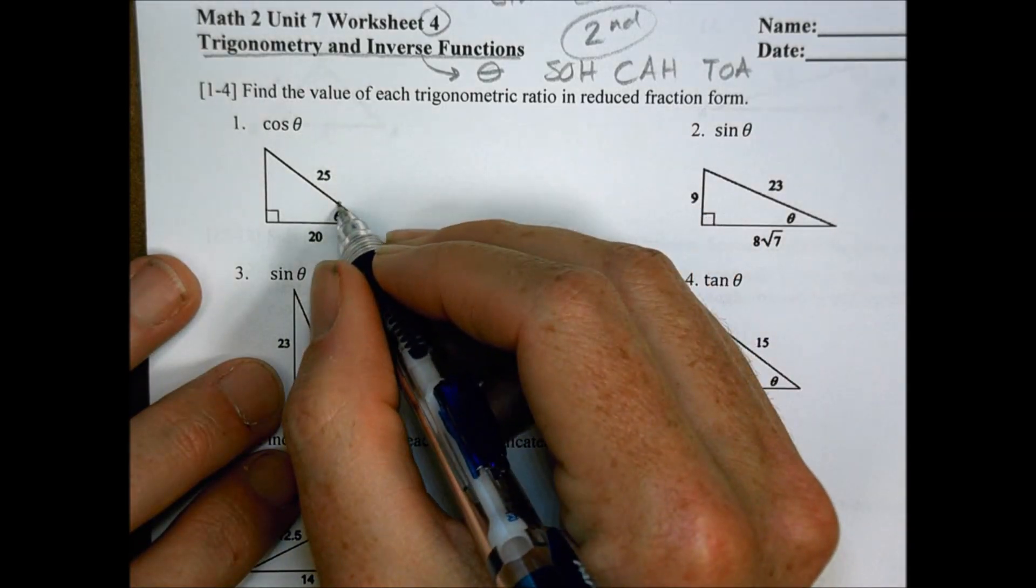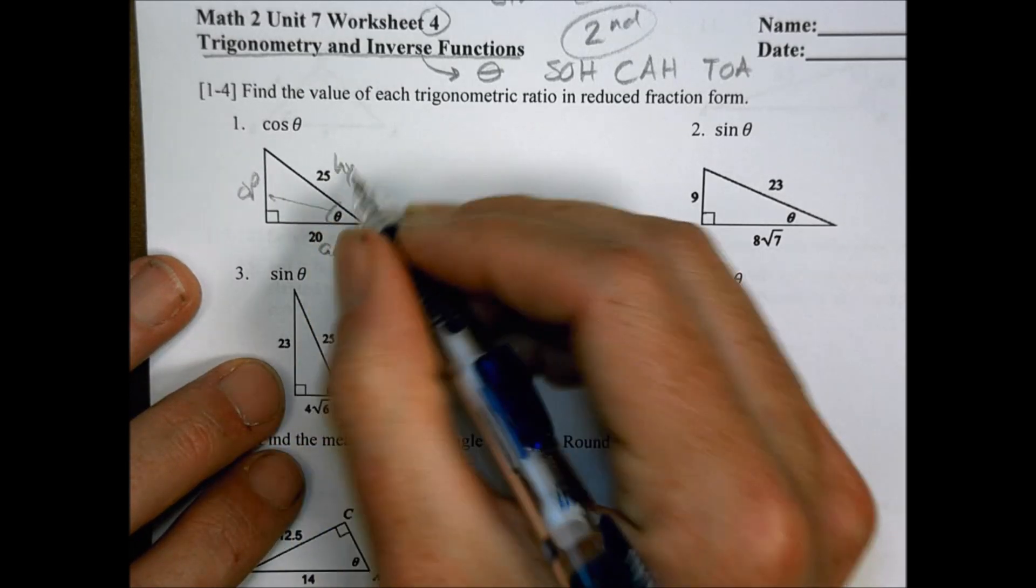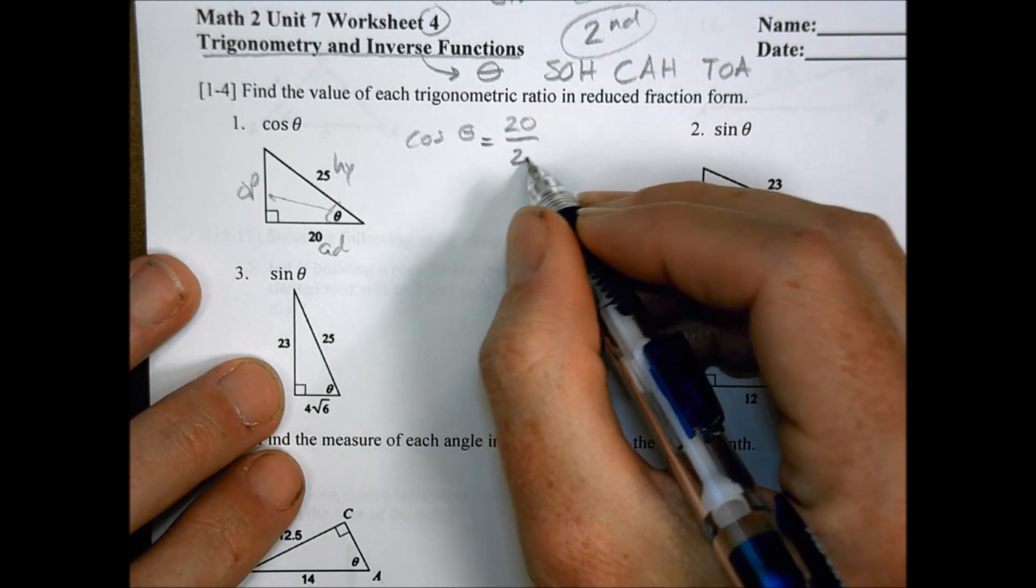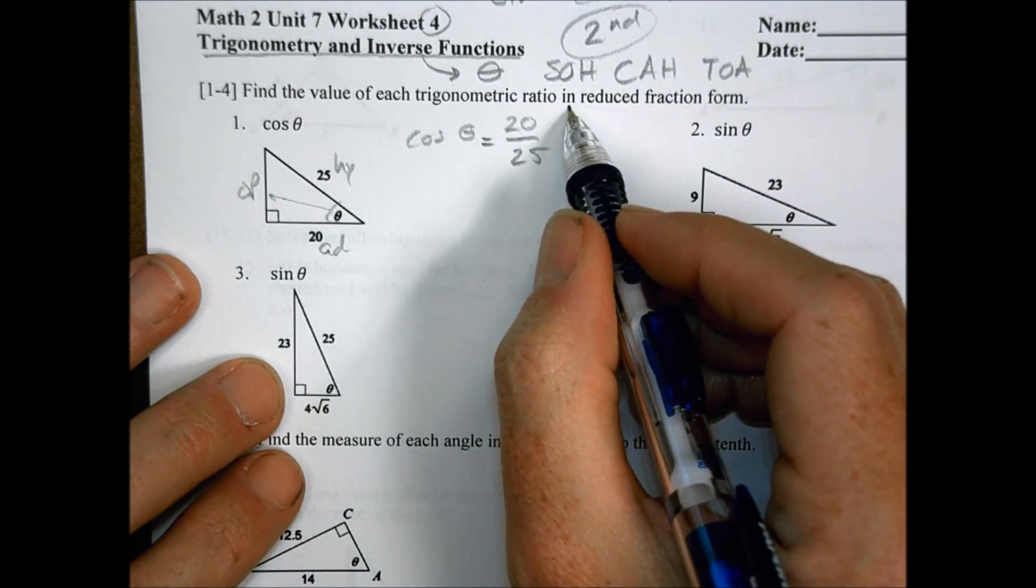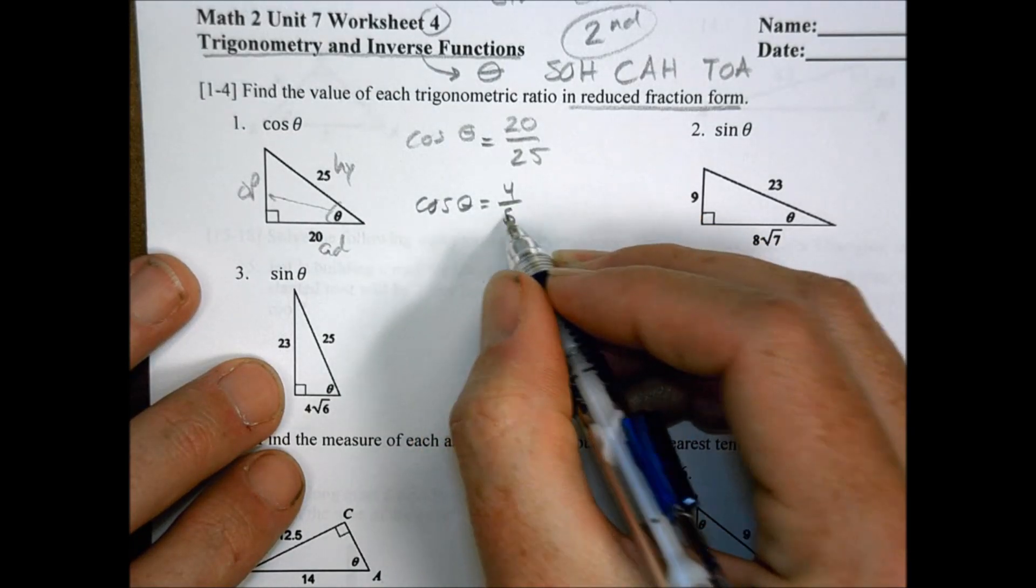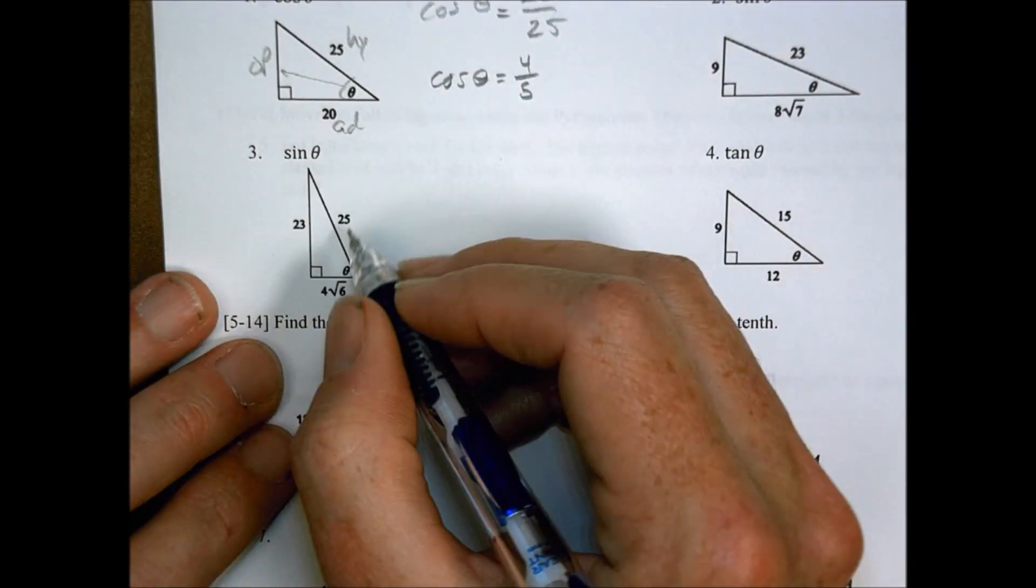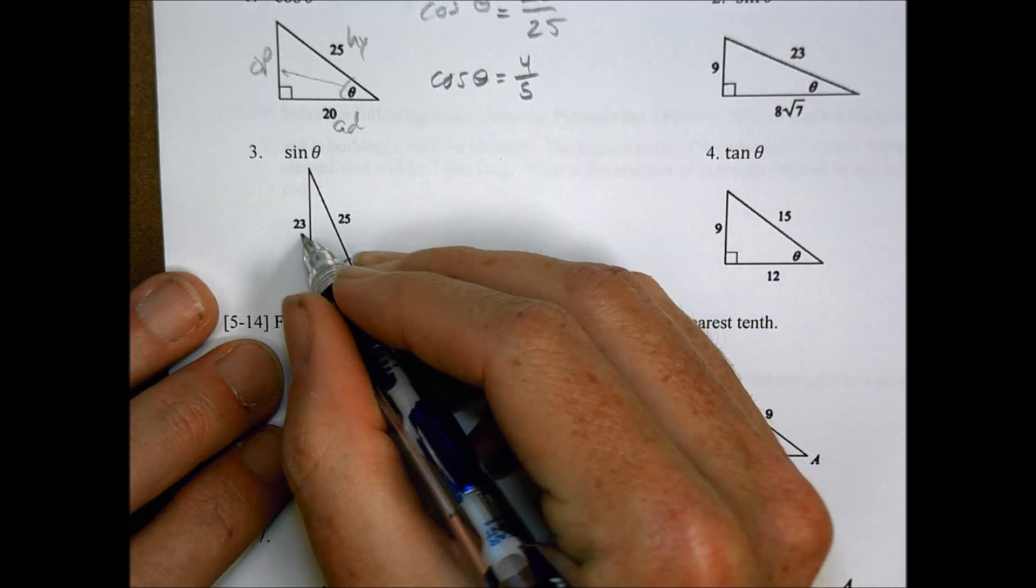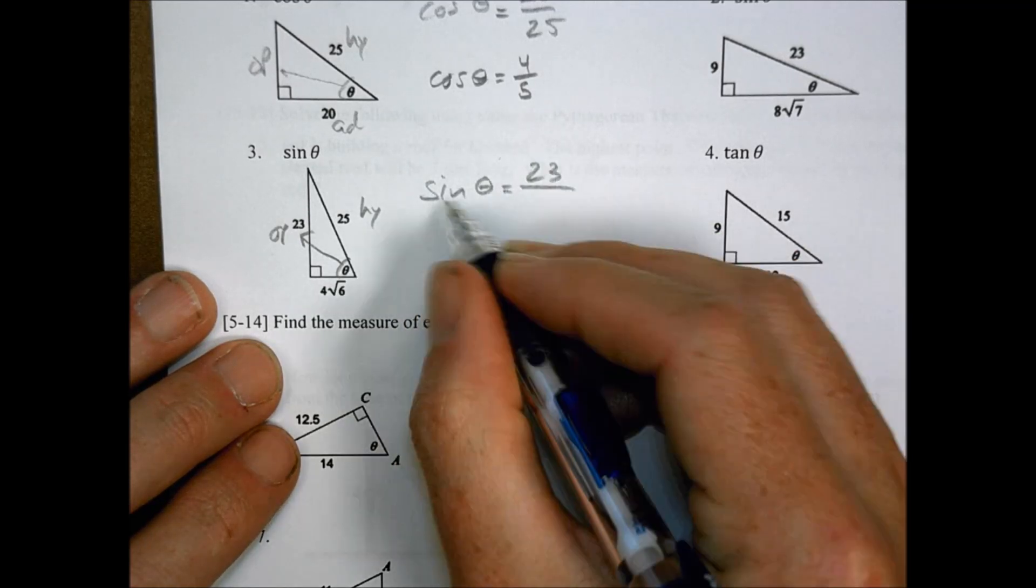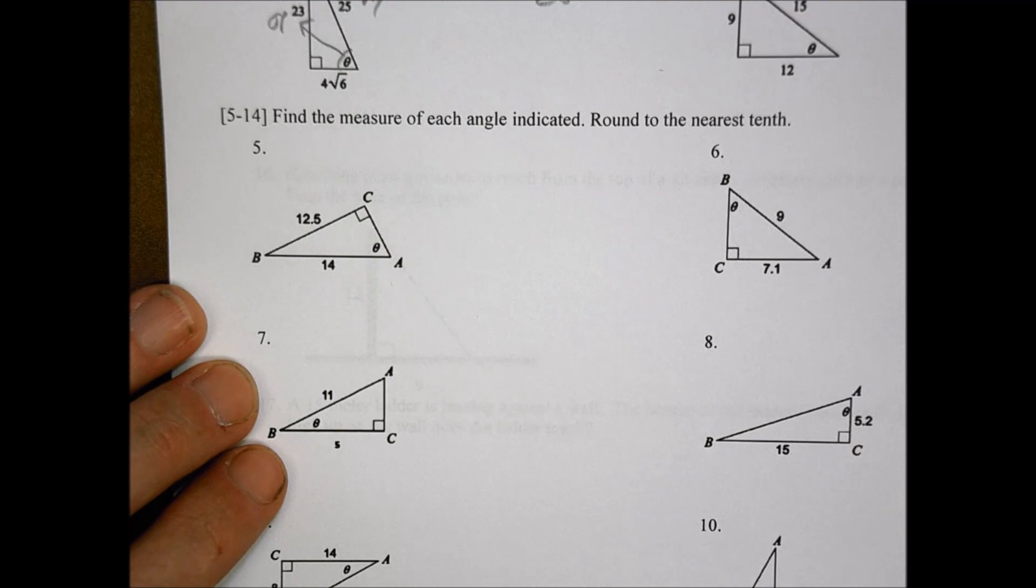Here we go. So cosine of theta. Cosine is going to be our adjacent, so this is our opposite. That becomes our adjacent and our hypotenuse. So the cosine of theta equals 20 over 25. All we're being asked to do today on this part is just write it in reduced fraction form. So the cosine of theta, reducing it down there, 5 goes in here 4 times and 5 goes in there 5 times and we leave it just like that. For number 3, I want sine of theta. Sine is going to be the opposite over the hypotenuse. So the sine of theta in this case here is going to be 23 over 25. There's nothing I can do to reduce that, so I leave it just like that.